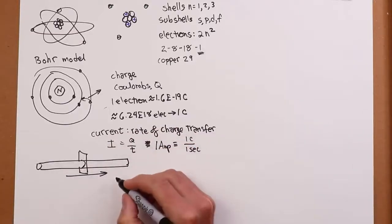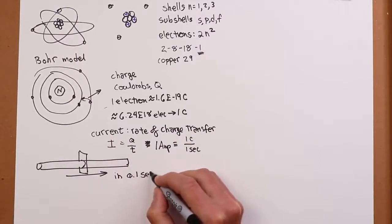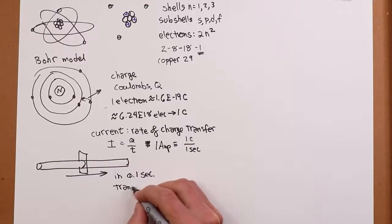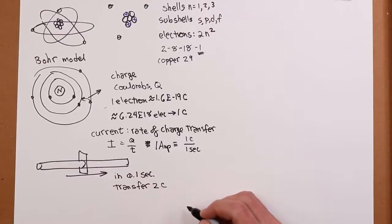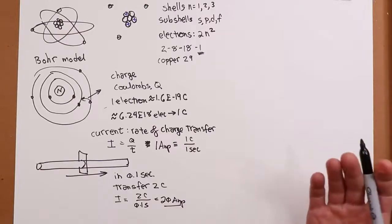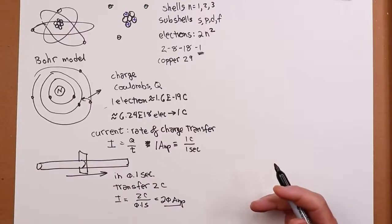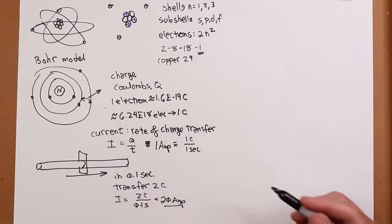So if we said that in a tenth of a second, we transfer through this wire, let's say two coulombs of charge, then the resulting current must be two coulombs over 0.1 seconds. So that's a 20 amp current, which is the size of like a breaker in your house. So you have a breaker for your kitchen appliances or something at 20 amps, 15 amps. That's fairly typical for that size.